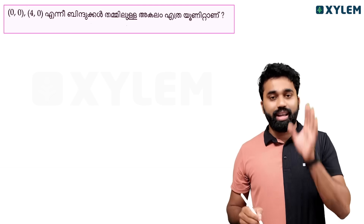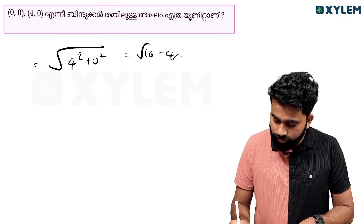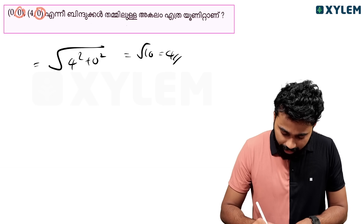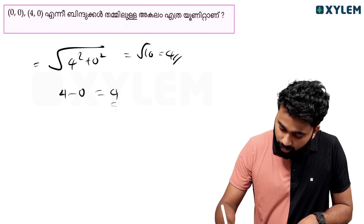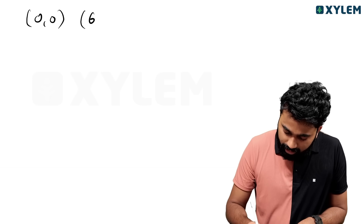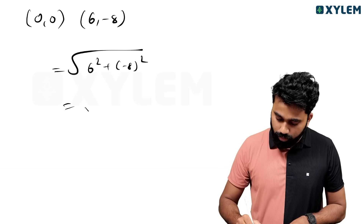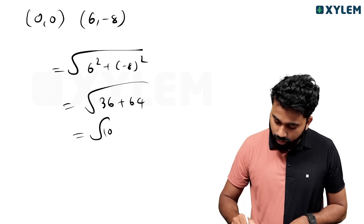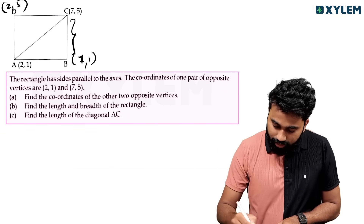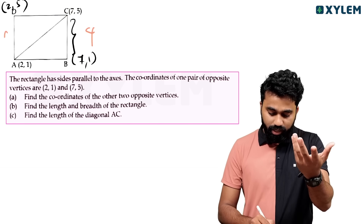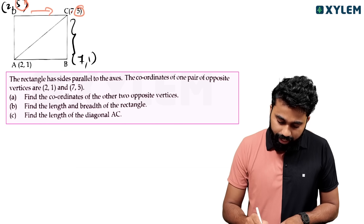Now, for another example: root of 4 squared plus 0 squared equals root of 16, that is equal to 4. For points like (7,8) and (2,5): distance is root of (7 minus 2) squared plus (8 minus 5) squared, equal to root of 5 squared plus 3 squared, approximately root of 34. Another example gives root of 5.